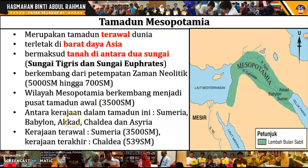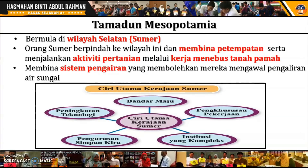Antara kerajaan yang wujud dalam tamadun ini ialah kerajaan Sumeria, kerajaan Babylon, kerajaan Akad, kerajaan Chaldea, dan kerajaan Assyria. Kerajaan yang terawal ialah kerajaan Sumeria, yang bermula pada 3500 sebelum Masihi. Manakala yang terakhir, Chaldea mengalami keruntuhan pada tahun 539 sebelum Masihi.